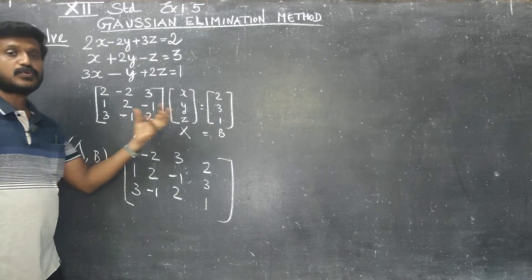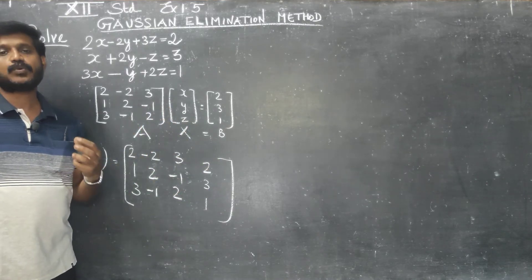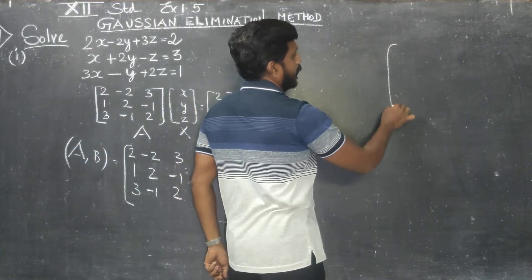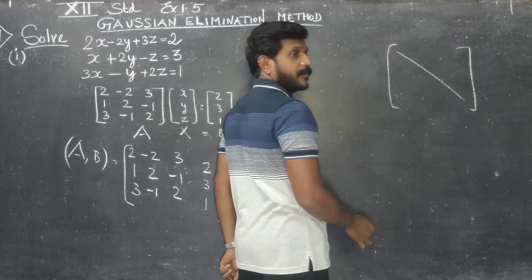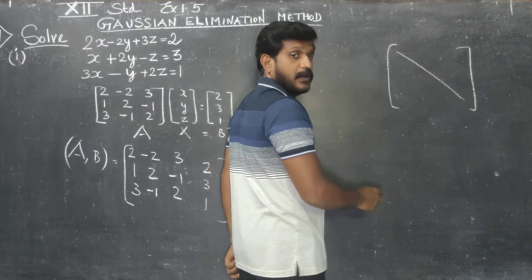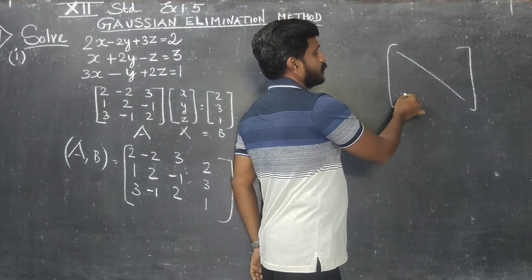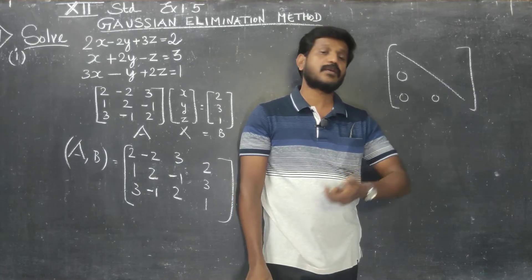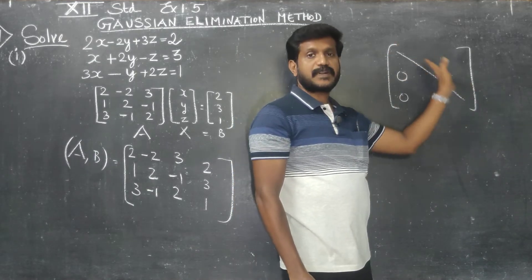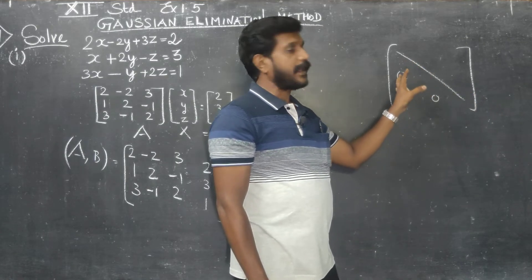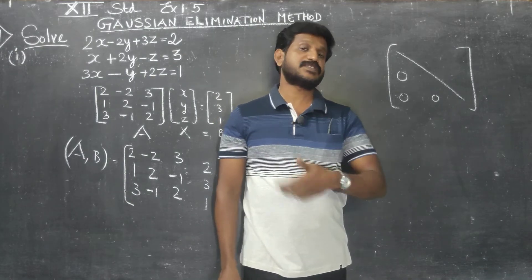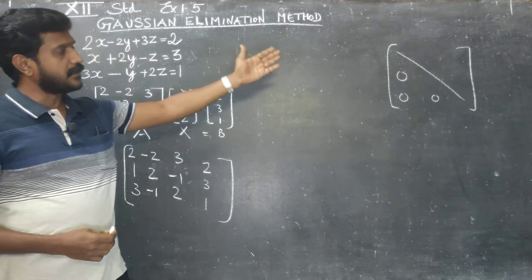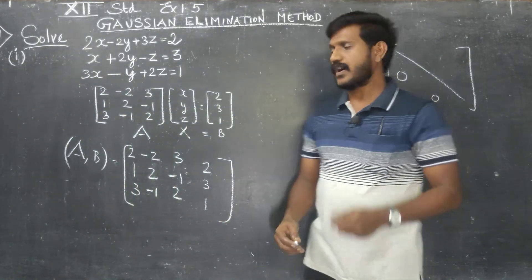After this, you have to transform this matrix into echelon form. What is echelon form? It is a form where, along the principal diagonal, the maximum entries are located and all elements below the principal diagonal are zero.